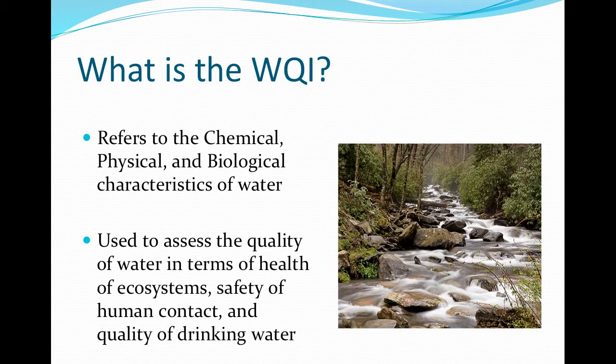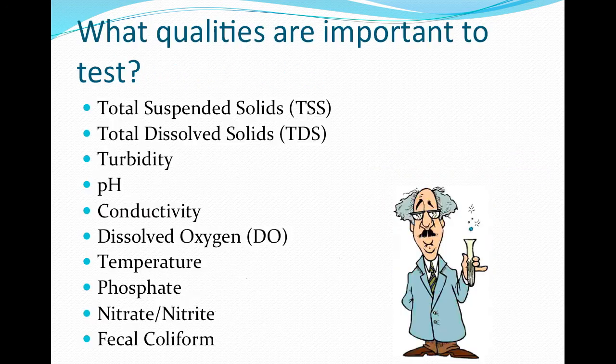Water Quality Index includes parameters we will discuss and a few others to assign a grade to a water body that is of interest. This is the process used by the state of Ohio to monitor the quality and health of aquatic systems.